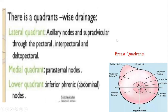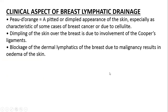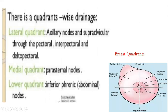Looking at the breast quadrants — with the sternum medially and the axilla laterally — we have the medial inner upper, medial inner lower, lateral outer upper, and lateral lower quadrants. The lateral quadrant drains lymph to axillary nodes, the medial quadrant drains to parasternal nodes, and the lower quadrant drains to the subphrenic or abdominal nodes.